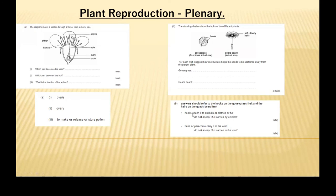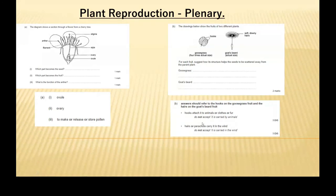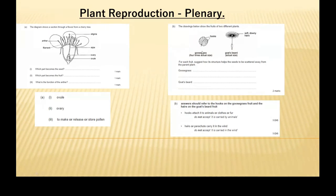The goose grass has hooks that attach to the animals' clothes or fur. For the goat's beard, it has hairs on them which parachute it or carry it in the wind. Do not accept 'it is carried by the animals' on its own — the word 'suggest' means you need to explain why that is beneficial and relate it to the structure of the seed.